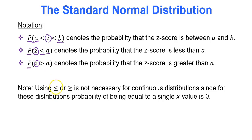It doesn't matter whether you use equal to or not for standard normal distributions, because when you're talking about continuous distributions, the probability of a single x-value — the probability that you're equal to a single x-value — will always be zero. That's because of the nature of continuous data: you can go to as many decimal places as you want. So between any two data values, there are so many z-scores that a single data value has a probability of zero.